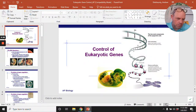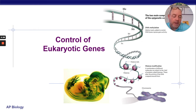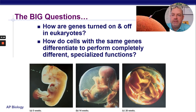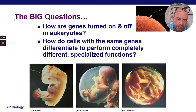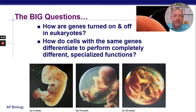Hey everybody, how's it going? We're going to jump into some control of eukaryotic genes. Prokaryotes and eukaryotes control their protein synthesis in different ways, so we're going to talk about eukaryotes today for the most part. Basically this is about how do they turn things on and off? How are some genes used pretty much all the time? And how are other genes maybe only used once or twice and then shut down permanently? There are actually several different ways this can happen.